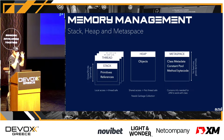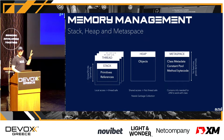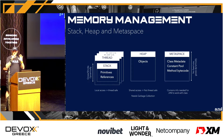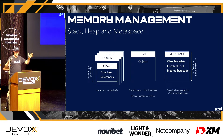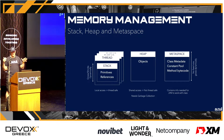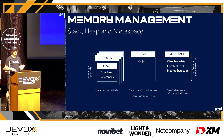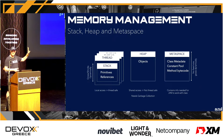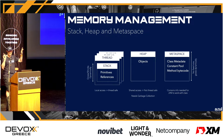We have the stack, which is bound to threads — every thread has its own stack frame, and there we have primitives and references. It grows and shrinks automatically; this is local access, so it's thread-safe. Then we have the heap — that's where the objects live. The heap is usually big, it has shared access, so it's not thread-safe and it needs garbage collection. Then we have the metaspace, which contains class information and class metadata needed for the JVM to work with classes.